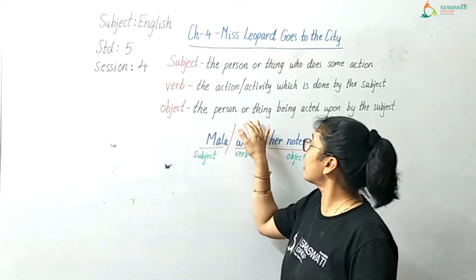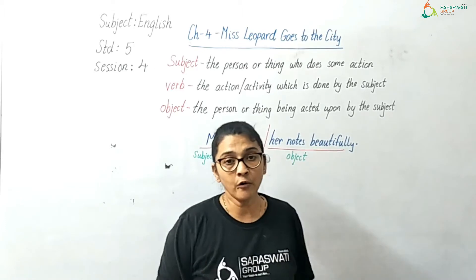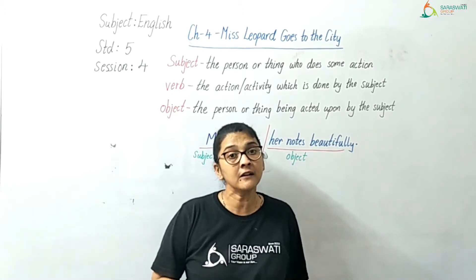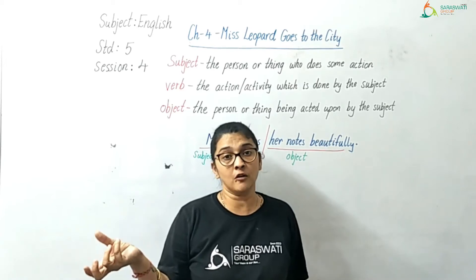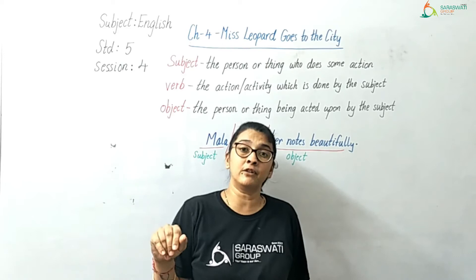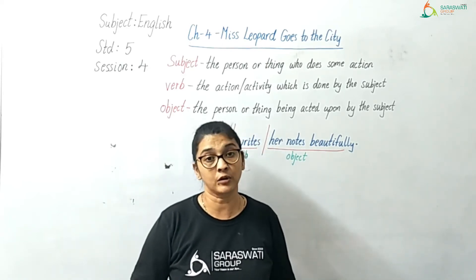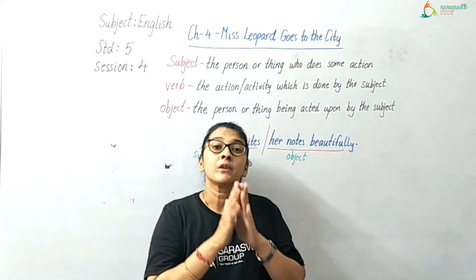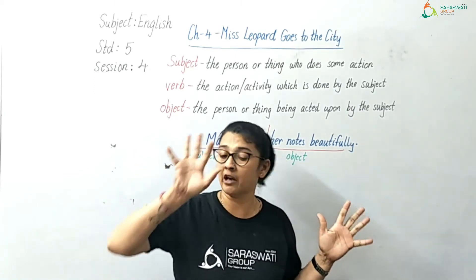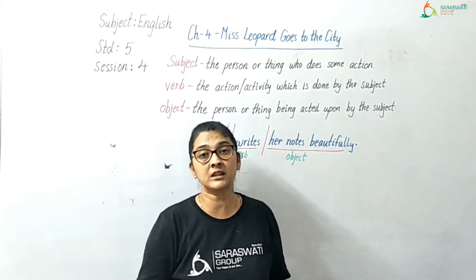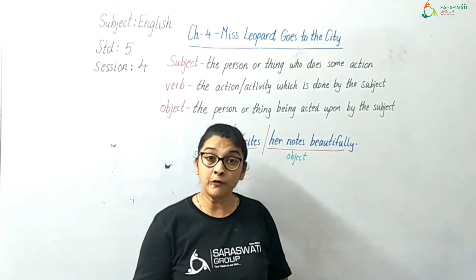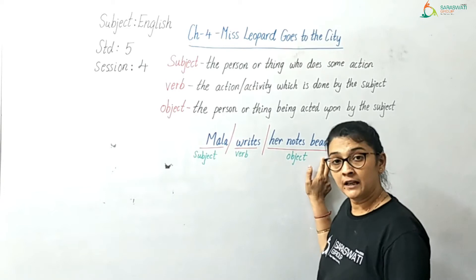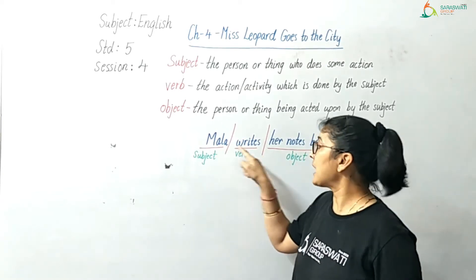In object, the person or thing being acted upon by the subject. When one person is doing the activity, the other thing or person is receiving the activity. So that person or thing on which the activity is received, on which the activity is done, is known as the object of the sentence. For example, if you want to bifurcate — separate the parts — this is the subject part, this is the verb part, this is the object part. For instance: Mala writes her notes beautifully — that is the whole sentence.